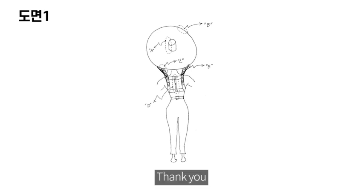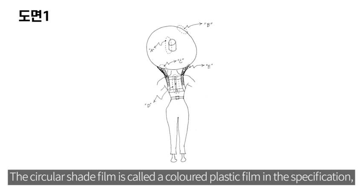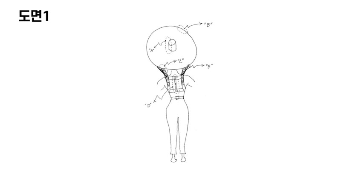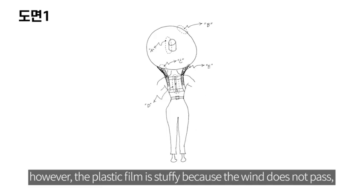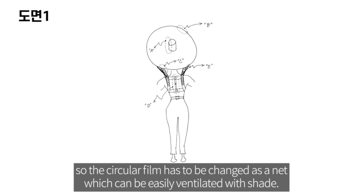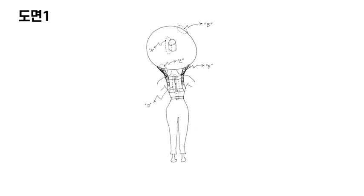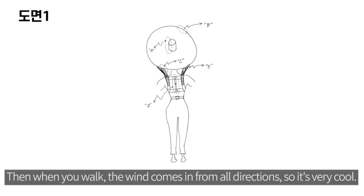Change 1: The circular shade film is called a colored plastic film in the specification. However, the plastic film is stuffy because the wind does not pass, so the circular film has to be changed as a net which can be easily ventilated with shade. Then, when you walk, the wind comes in from all directions, so it's very cool.